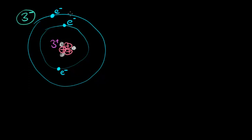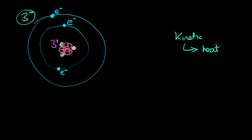So friction — not only can friction turn kinetic energy into heat energy, that's its main purpose, slowing things down and creating heat through rubbing — but friction also can move electrons from one atom to another, from one material to another.